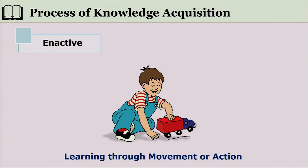In the enactive phase, children learn by manipulating objects — moving things, stacking them, and observing which surfaces help objects stand and which make them topple. In short, in order to know about things we manipulate the environment. Knowledge acquisition in the beginning is enactive, involving a set of actions on the object about which we want to know.